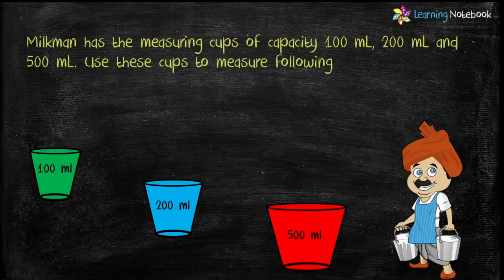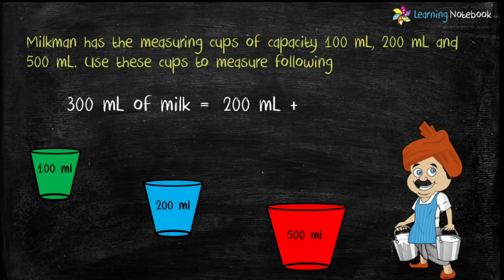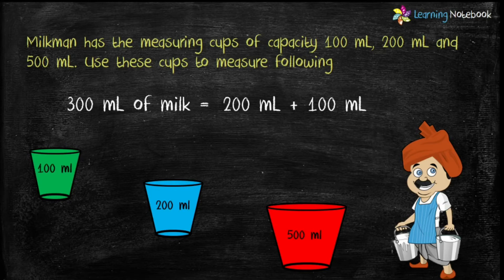Next, the milkman has to measure 300 ml of milk. He takes the 200 ml cup first; 300 minus 200 is 100, so he takes the 100 ml cup next. Therefore, to measure 300 ml of milk, the milkman uses cups of 200 ml and 100 ml.